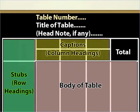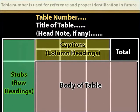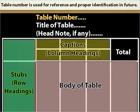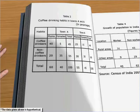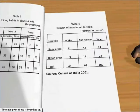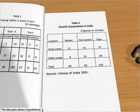Table number may be placed at the top or at the beginning of a table and is used for reference and proper identification in future. Normally, the table number is given in terms of a complete number.